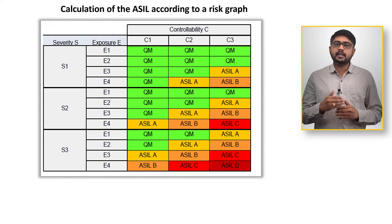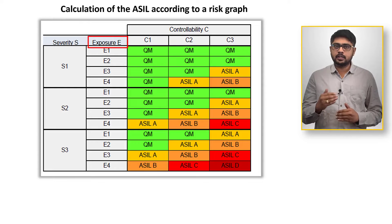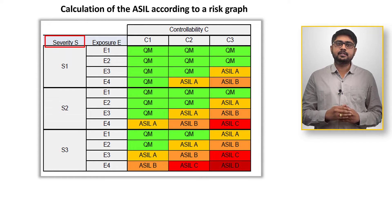To determine the ASIL levels, three parameters are considered: Exposure E, Severity S, and Controllability C.